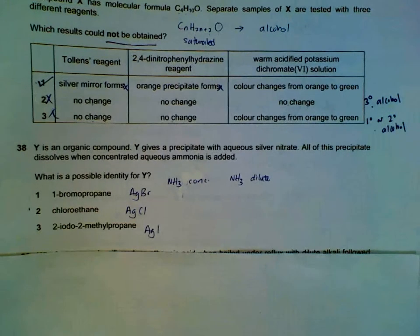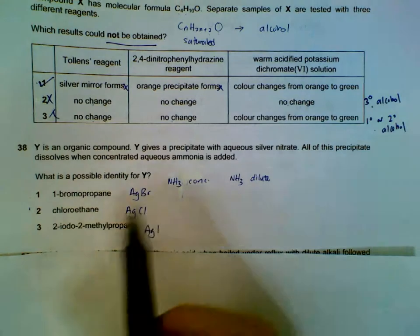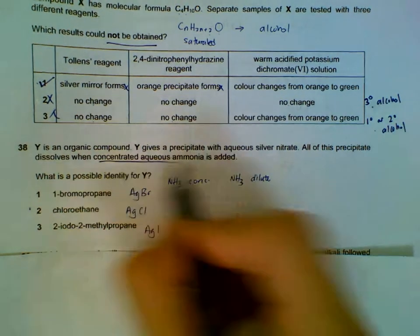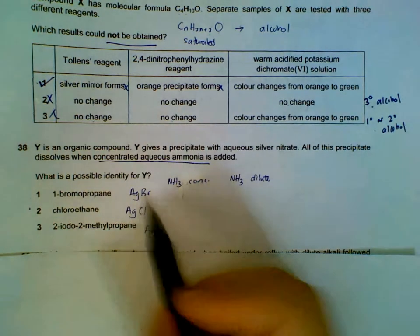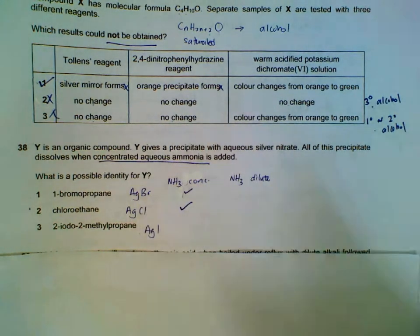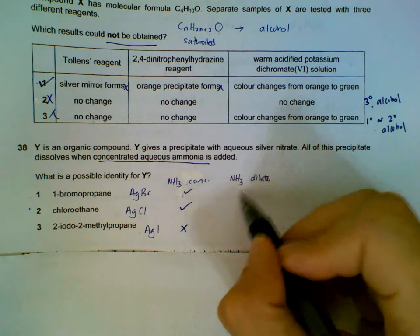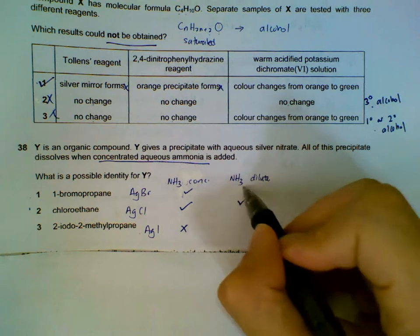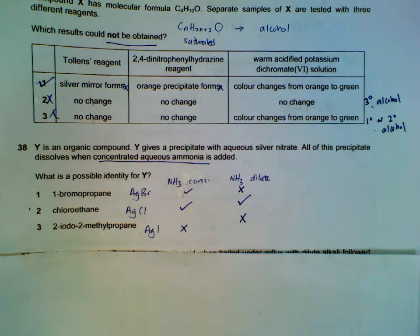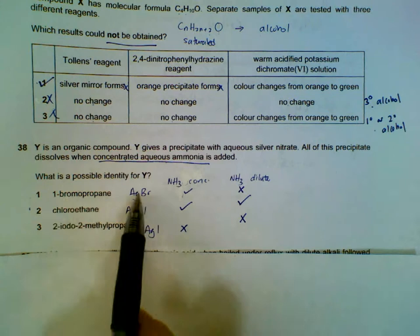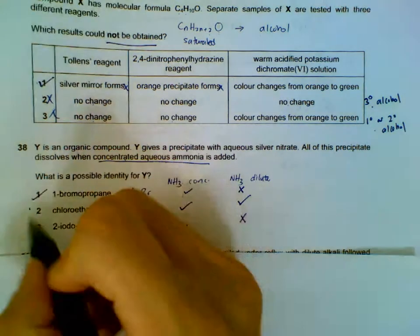Question 38: when silver halide precipitates form, which ones dissolve when concentrated aqueous ammonia is added? Silver bromide and silver chloride will dissolve in concentrated aqueous ammonia; silver iodide will not. For completeness: with dilute ammonia, only silver chloride dissolves; bromide and iodide do not. With concentrated ammonia, both bromide and chloride dissolve — precipitate forms first, then dissolves.